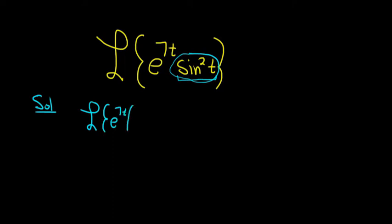So we have the Laplace of e to the 7t, and then sine squared is 1 minus cosine 2t, all divided by 2.